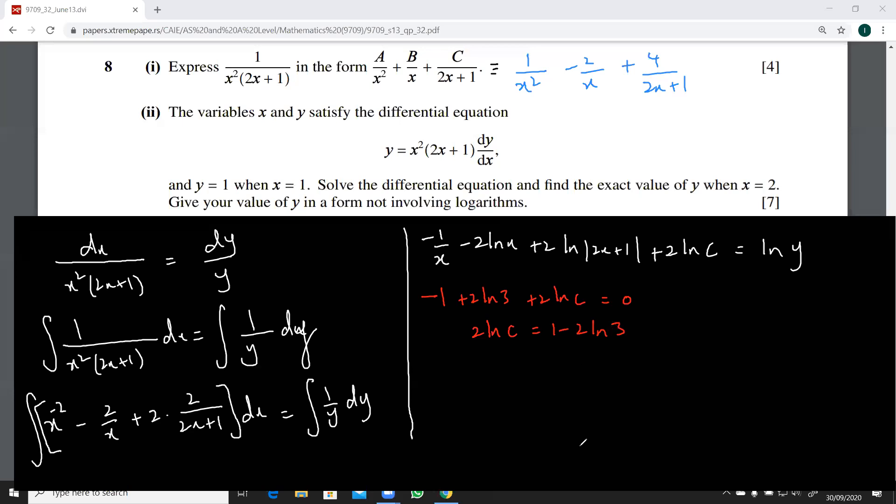So now this equation becomes minus 1 over x minus 2 ln x plus 2 ln 2x plus 1 plus 1 minus 2 ln 3. That is equal to ln y. It says find y without the logarithm here.